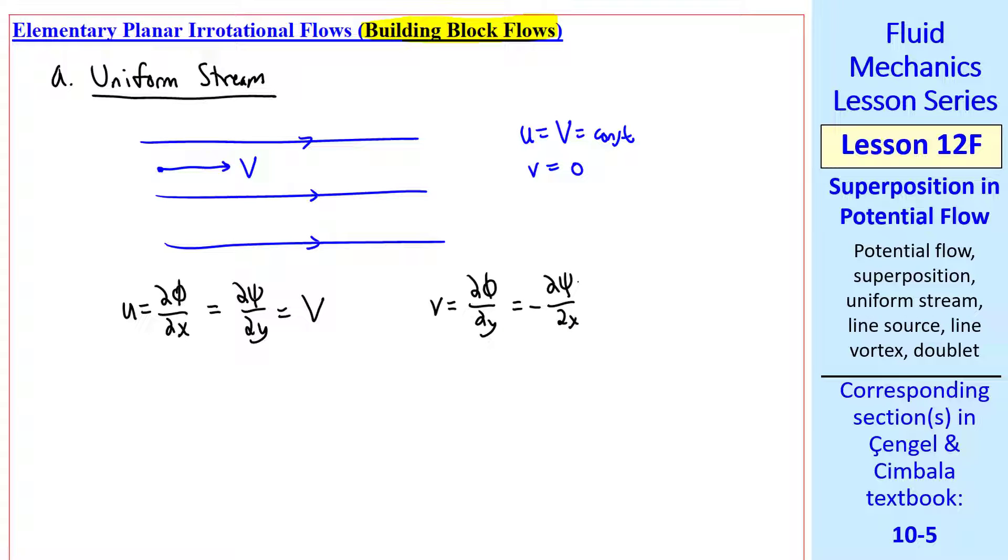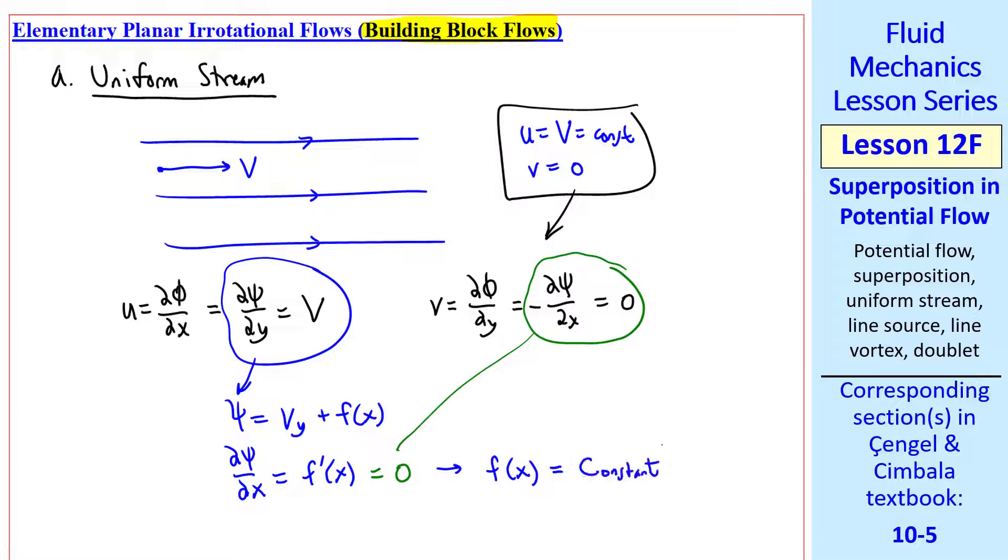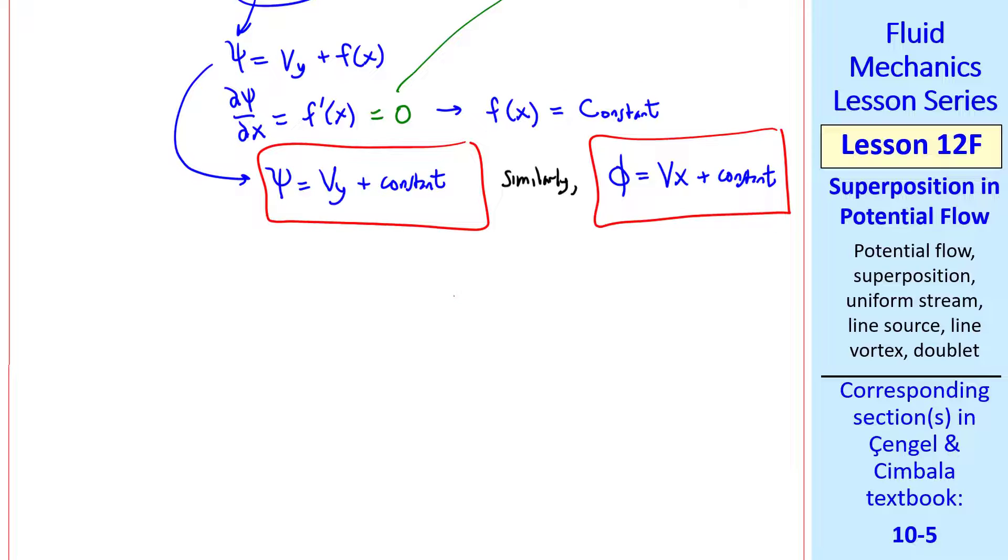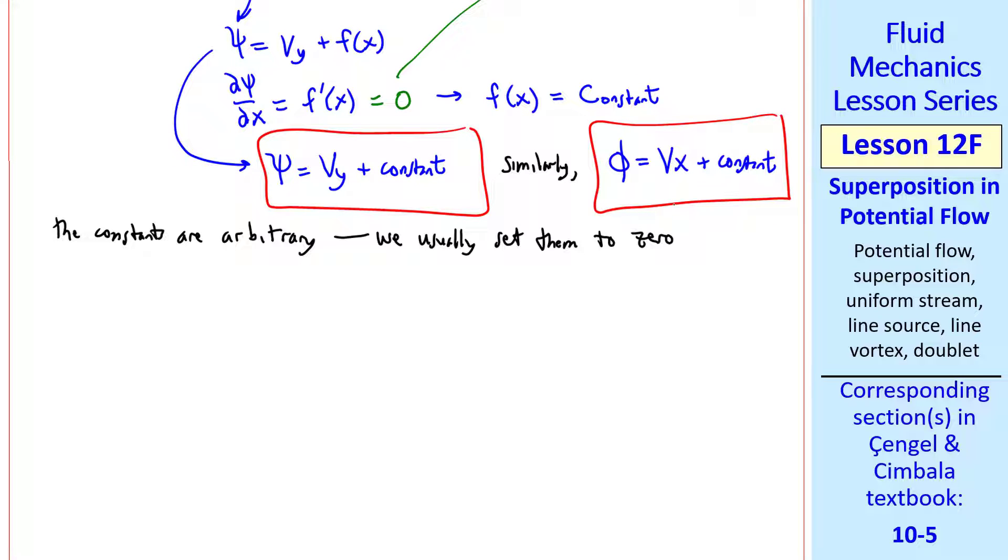And little v is del phi del y, or negative del psi del x, and either of these has to equal 0. I'll pick one of these and integrate, psi equal V y plus f of x, so del psi del x is f prime of x, but del psi del x has to equal 0, which we integrate and find that f of x is a constant, therefore psi equal V y plus a constant. You can do a similar analysis with phi, and we get phi equal V x plus a constant. These constants are arbitrary. We usually set them to 0, but there are cases where we won't want to do that.